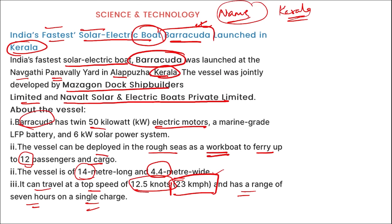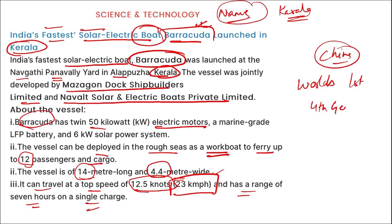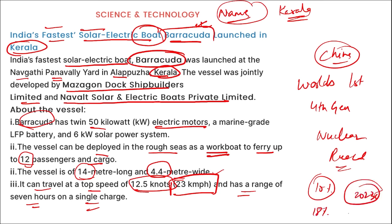China has started up the world's first fourth-generation nuclear reactor. China has a goal to produce 10% of its electricity from nuclear energy by 2035, and 18% by 2060.